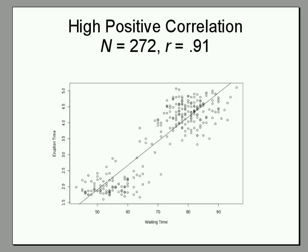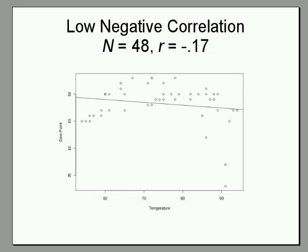The next graph shows a very low negative correlation of negative 0.17. On the x-axis is the temperature at various times during two days, and on the y-axis is the dew point. So they're related, but just barely.